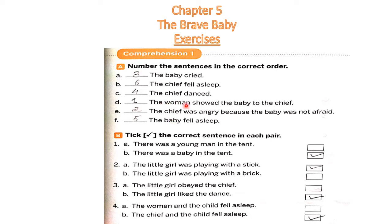Number one: the woman shows the baby to the chief. Number two: the chief was angry because the baby was not afraid. Number three: the baby cried. Number four: the chief danced. Number five: the baby fell asleep. Number six: the chief fell asleep. We have already read this story, so we will number it according to its order.